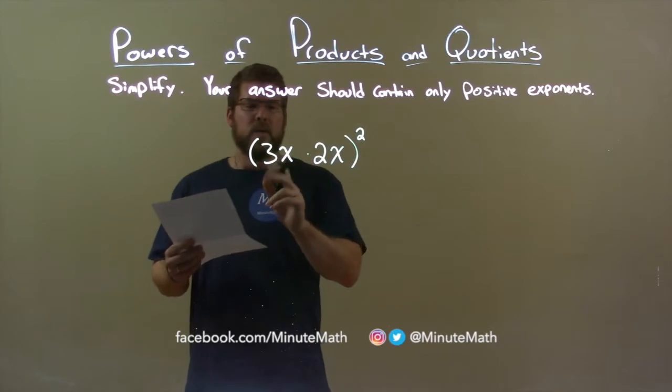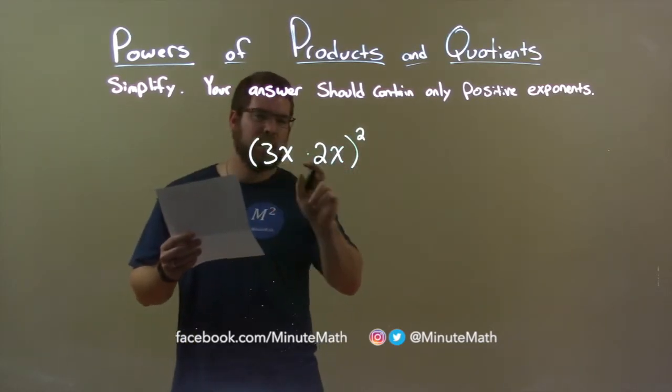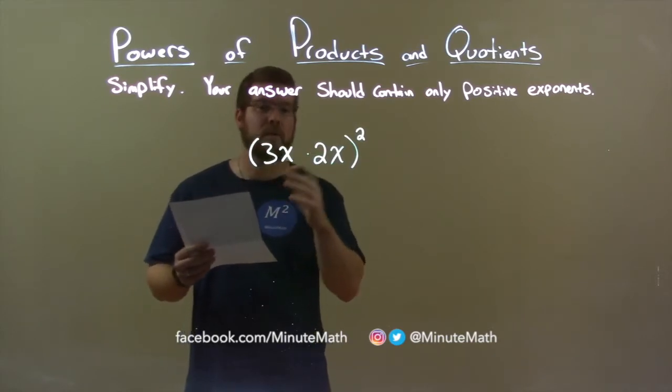well, look at the coefficients. We first can simplify within the parentheses, so I'm going to take the 3 and the 2, the coefficients, and multiply them together first. 3 times 2, 6.